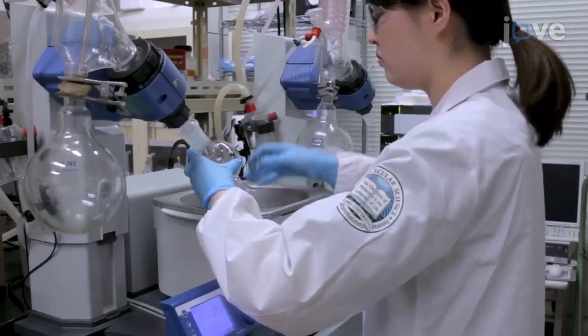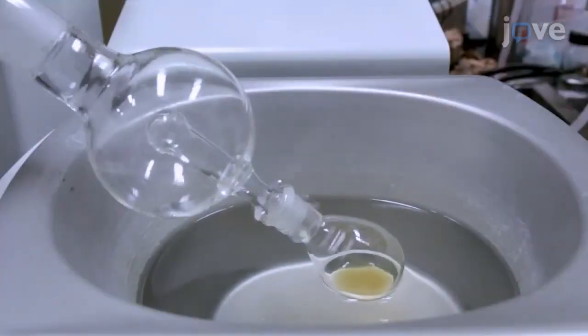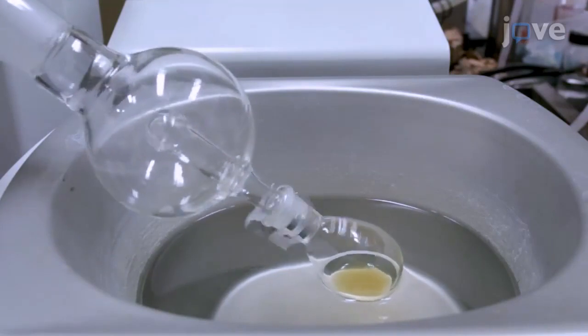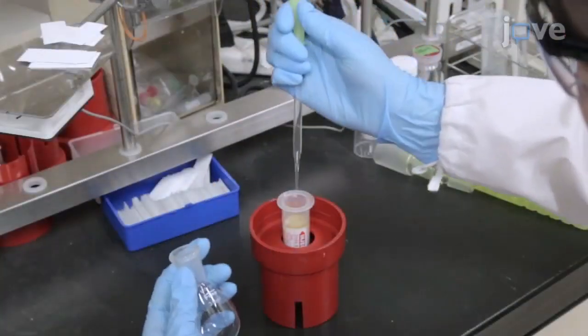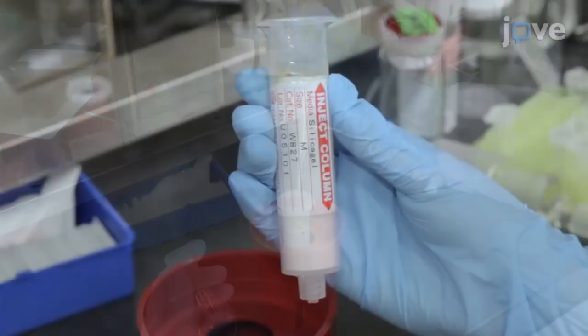Then use a rotary evaporator under vacuum to remove the solvent and other volatile materials, and use silica gel flash column chromatography to purify the residue directly.